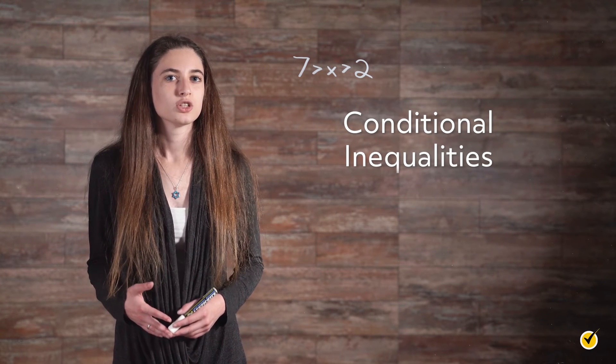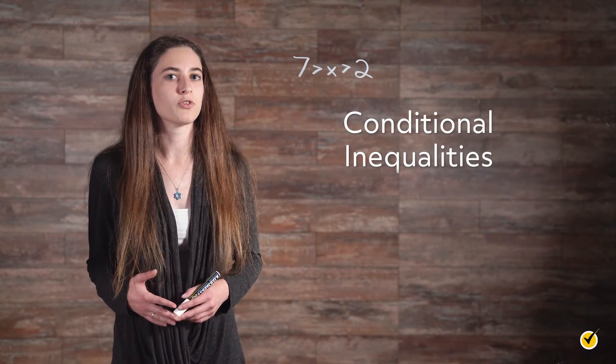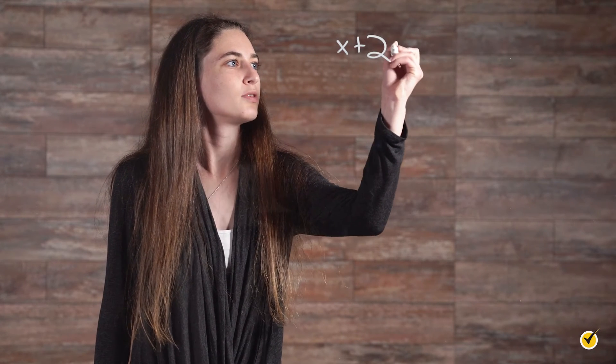To solve a conditional inequality, treat it as you would a standard equation and solve for the variable. For example, say you were given x plus 2 is greater than 9. To figure out the value of x, we isolate the variable on one side, just as with an equation. So you're going to subtract 2 from both sides, and you're left with x is greater than 7. This means that any value of x above 7, not including 7, will make this inequality true.